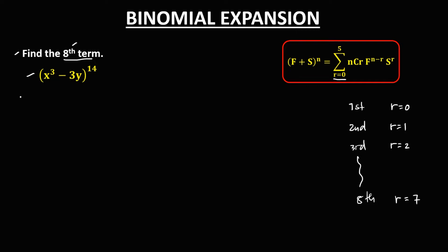So we have r is 7. Then for n, n is the exponent, that's 14. And f, the first term, is x to the power 3. Then s, the second term, is negative 3y.